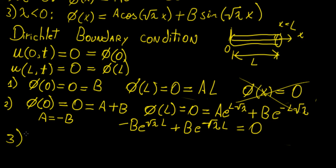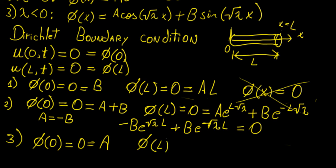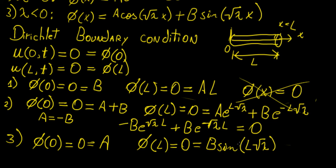Moving to case three, where lambda is less than zero: phi of zero equals zero gives us A times cosine of zero plus B times sine of zero, which means A equals zero. So we can discard the cosine term. Applying the second boundary condition, we're left with B times sine of L times the square root of lambda equals zero. We have two choices: setting B equal to zero gives the same trivial solution problem we've been encountering.